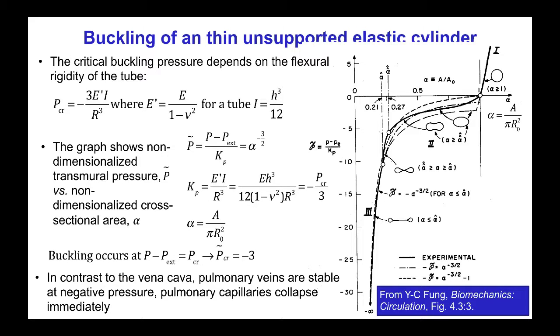In contrast to some veins like the vena cava, other veins are more stable at negative pressures, such as the pulmonary veins, and this is because they are surrounded by tissue that provides support.